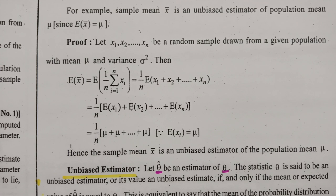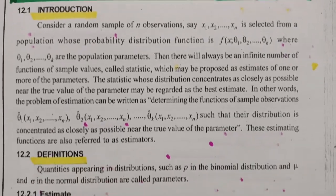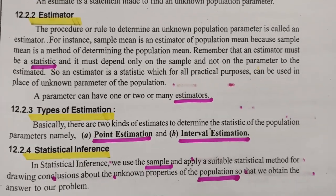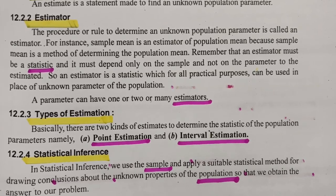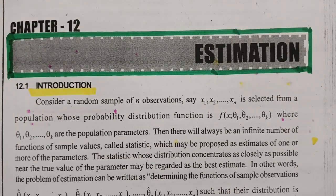So this is how I have explained biased and unbiased estimators, point estimation and interval estimation, what is estimation, what is an estimator, what is an estimate, and what are the parameters. Hope you all have clarity on this. This content is taken from the textbook, and you can follow the textbook as well. Please continue the playlist as I will be uploading many more topics from statistics on estimation. If you like this video, please like, share it with your friends, and subscribe to this channel. Thank you so much.